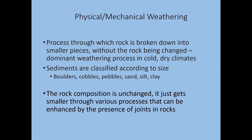For detrital or clastic sedimentary rocks, the rock is named based on its particles. For example, if sand-sized particles have been cemented together, the rock is sandstone; if they are silt-sized, the rock is siltstone. For boulders and cobbles, the name depends on whether the particles are angular or more rounded.